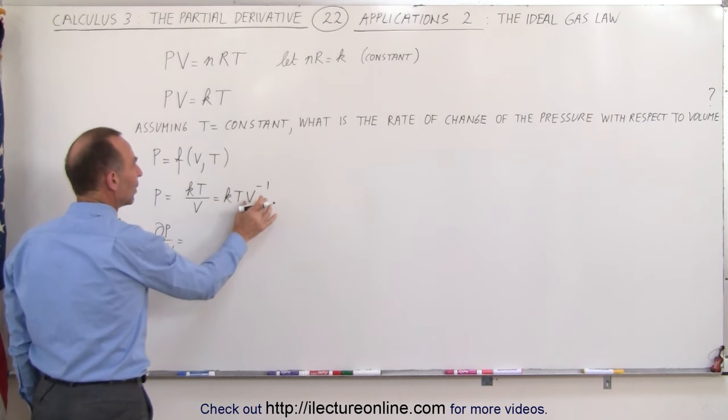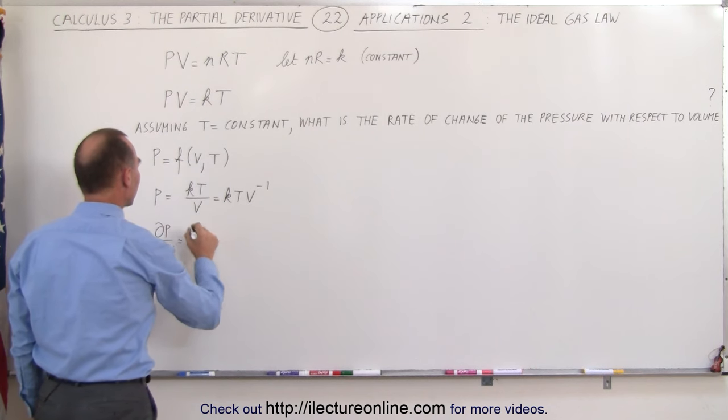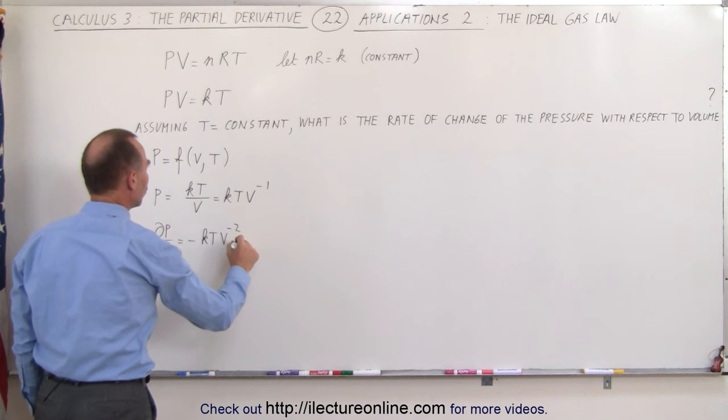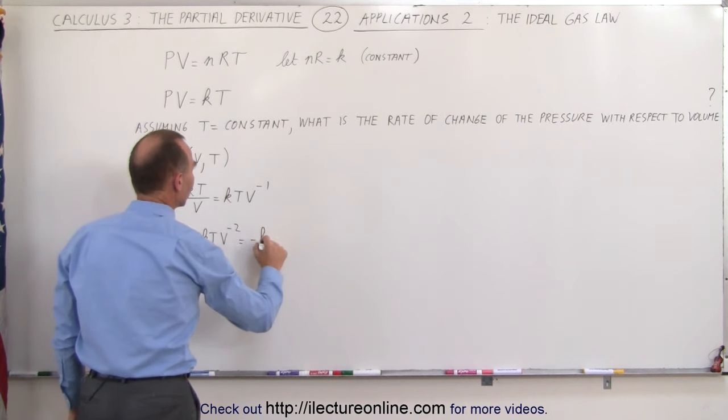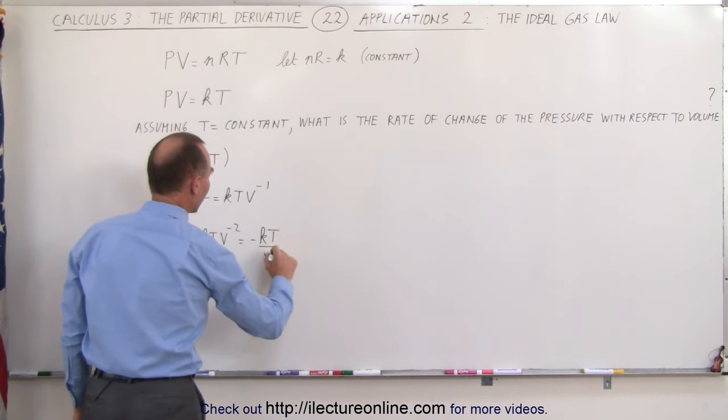we take the derivative of V to the minus 1. We get minus 1 times KT times V to the minus 2, which is equal to minus KT divided by V squared.